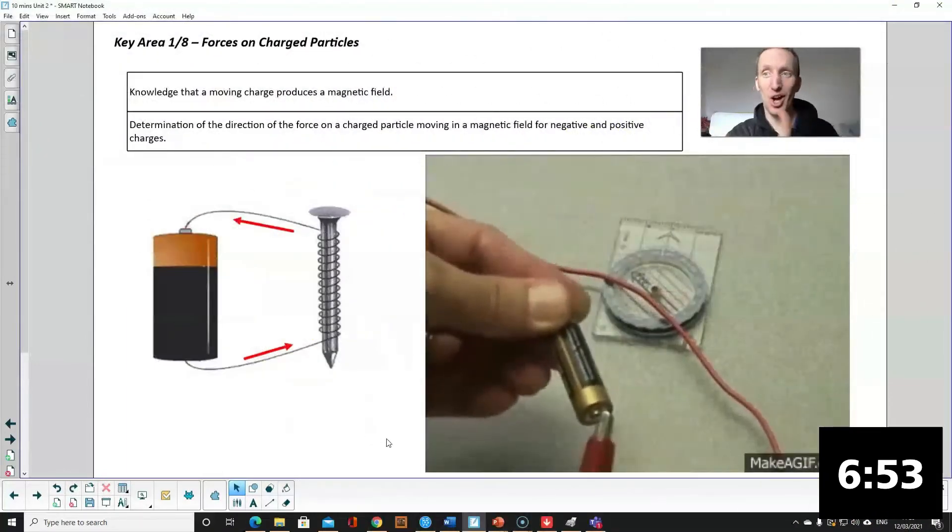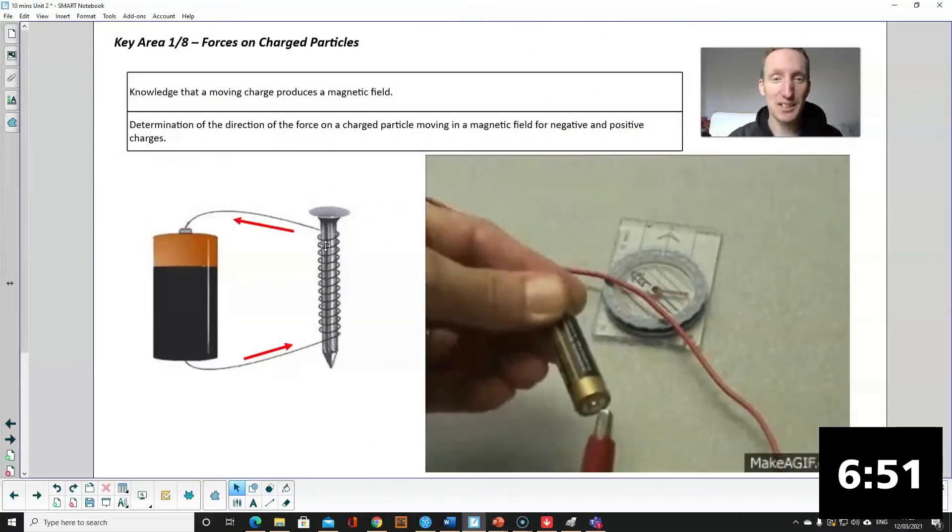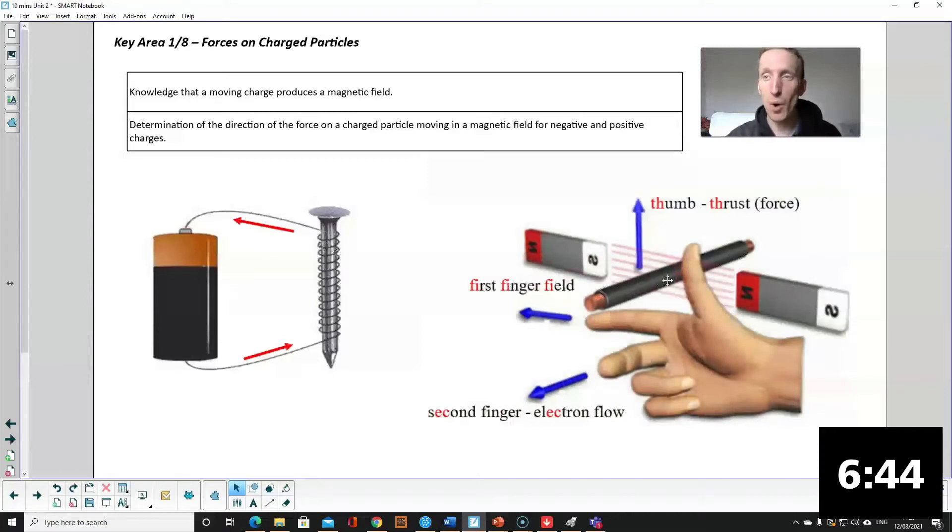Okay knowledge that moving charge creates a magnetic field. This is what happens in an electromagnet when you have a current flowing in a wire you create a magnetic field. And if you put a wire with a current flowing in another magnetic field those two magnetic fields interact and you'll get some force and therefore some movement. To work out the direction of the force we use what we call Fleming's right hand rule.